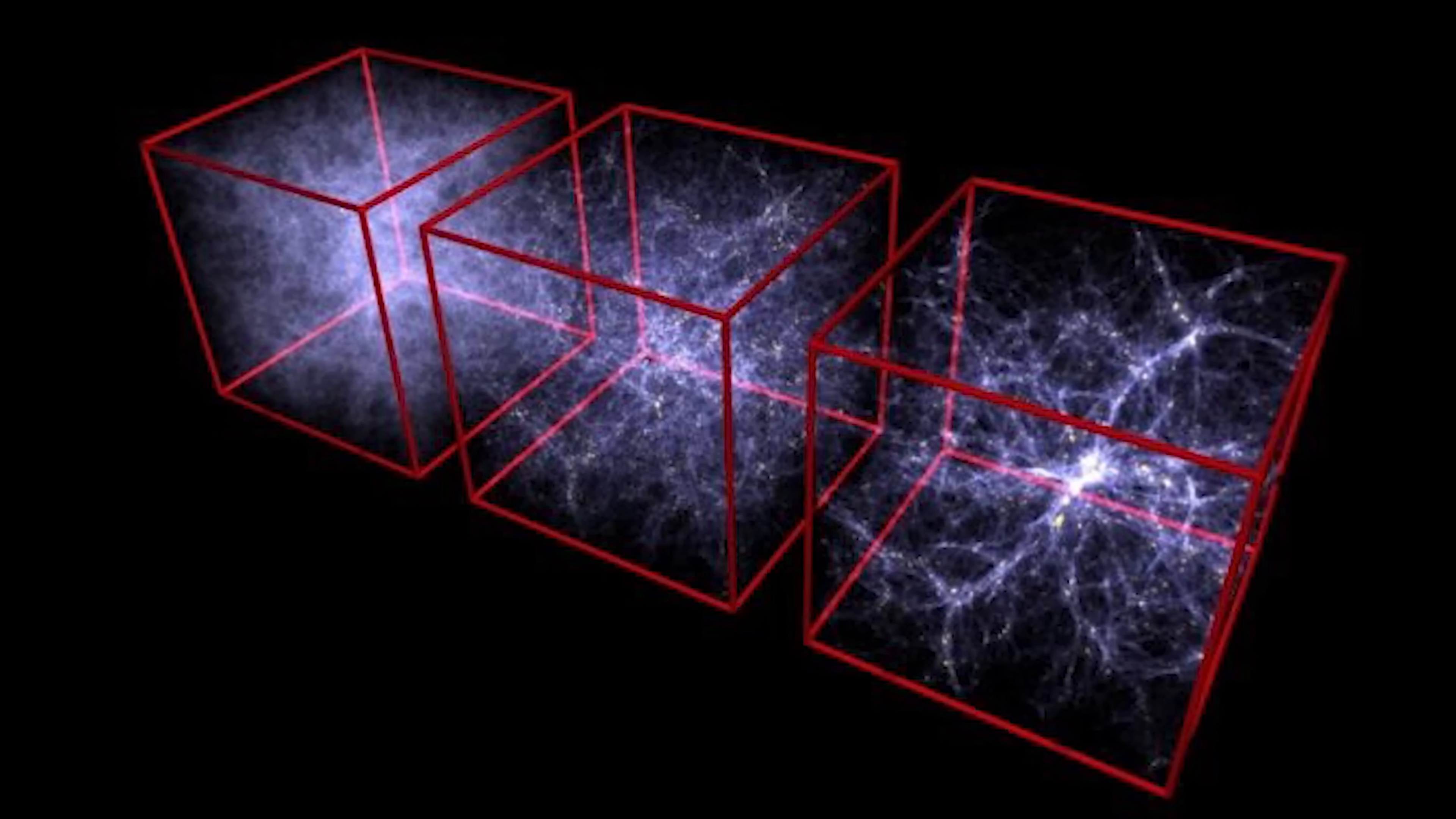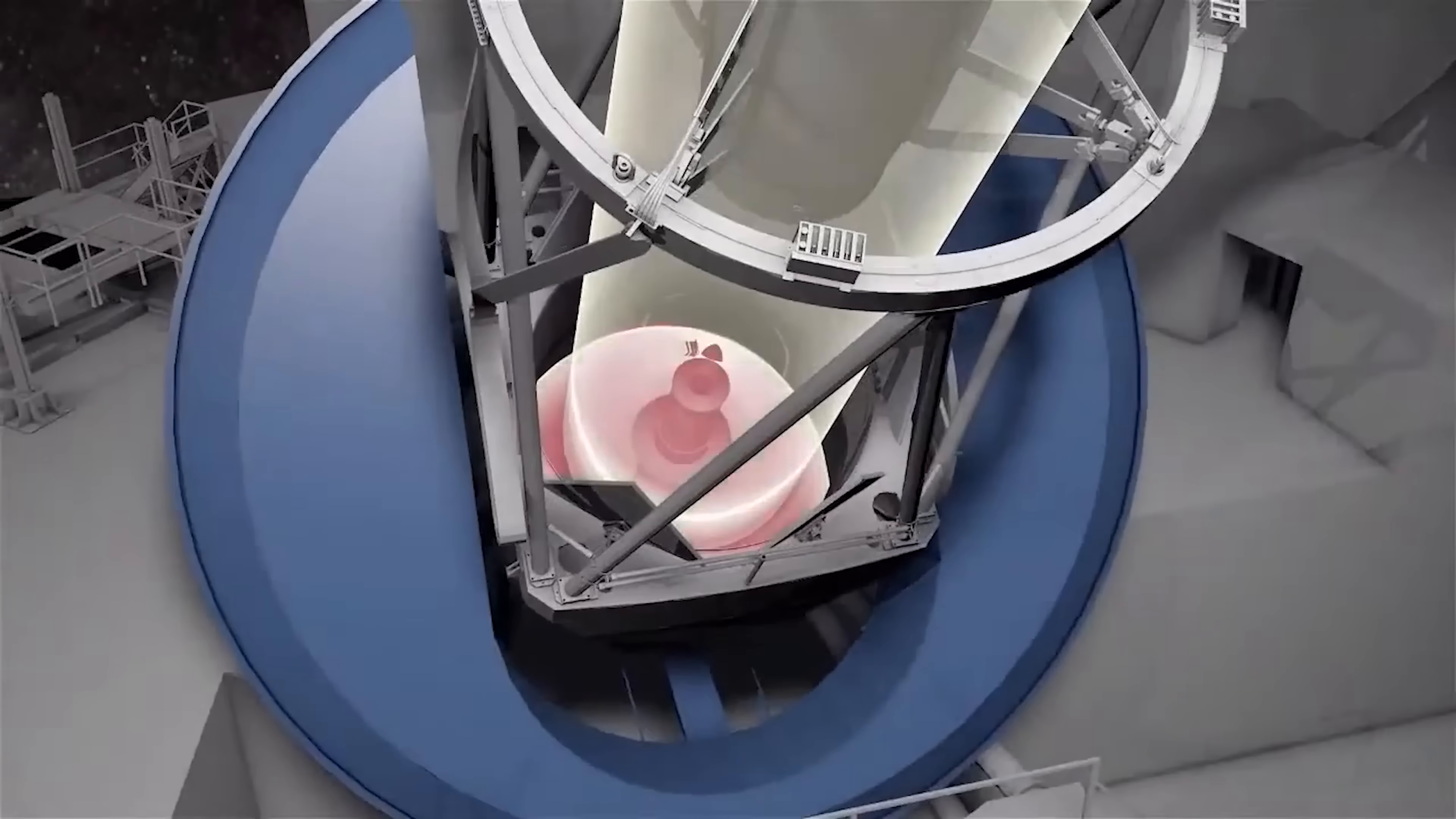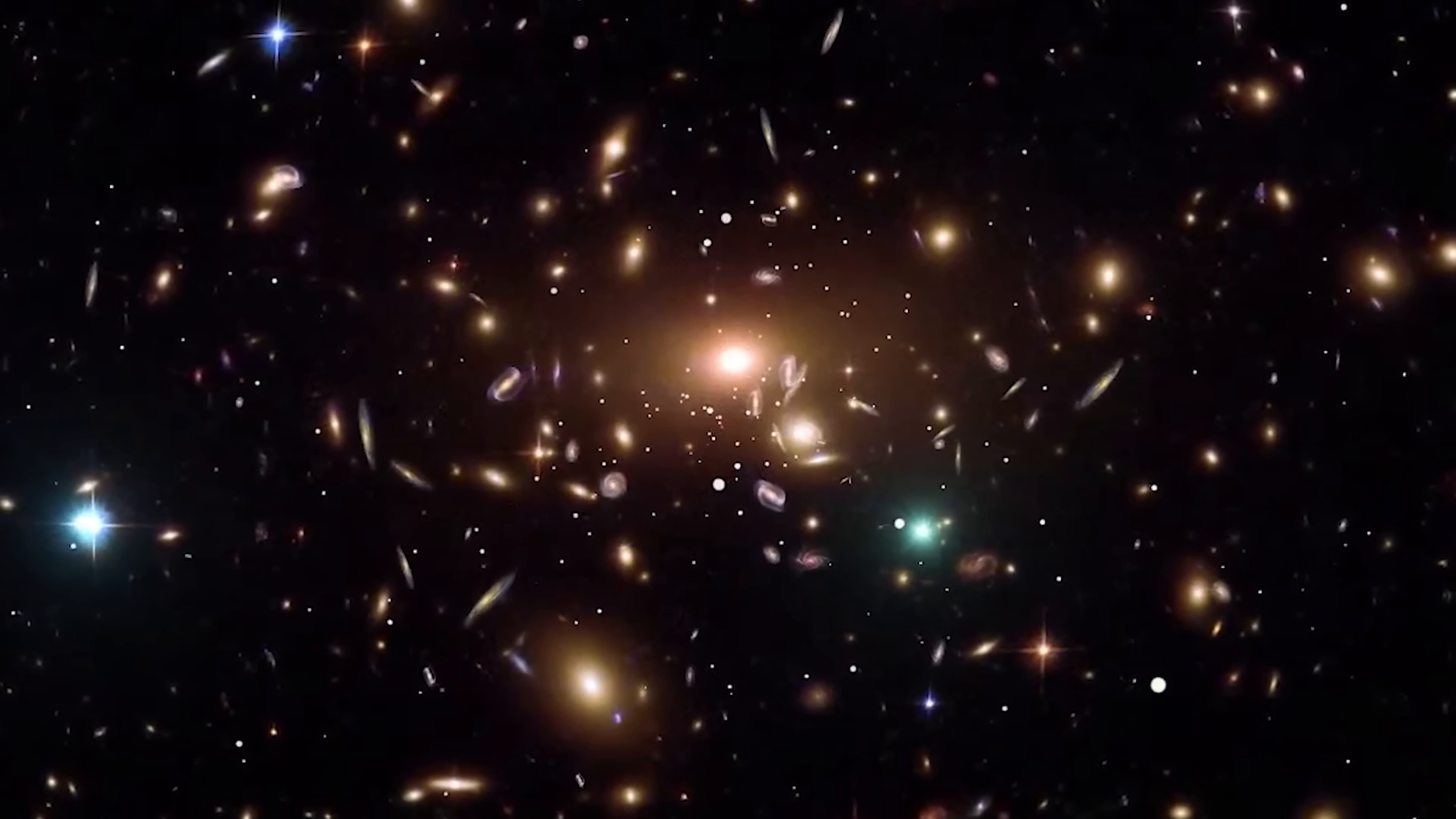While the nature of dark energy remains unknown, astronomers are able to measure its effects. They can determine whether it changes by observing the acceleration of galaxies moving apart from one another at various stages of the universe's history. Last year, when researchers using dark energy spectroscopy instruments detected indications that dark energy's influence had varied over time, many scientists assumed it was just a temporary anomaly in the data. Yet, following more than a year of observations, scientists have confirmed that dark energy is exhibiting behaviors that are much more unusual than previously thought.